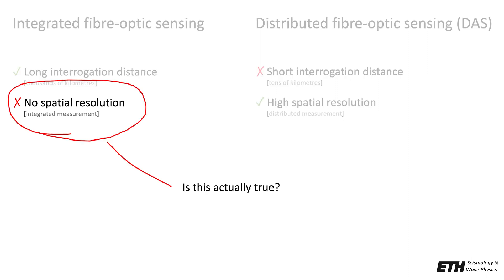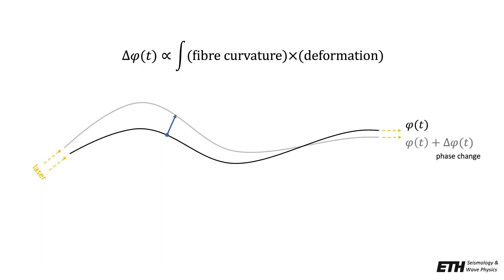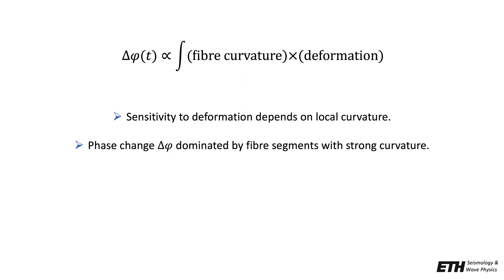We were wondering if integrated systems really have no spatial resolution at all, and if so, if anything could be done about it. Key to answering this question is this equation, which states that the measured phase change is proportional to the integral over the local fiber curvature times the local deformation of the fiber. This equation has interesting implications: since sensitivity to deformation depends on curvature, it suggests that the measurement is dominated by contributions from fiber segments with strong curvature.